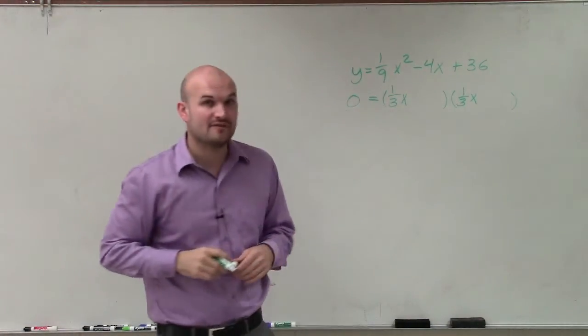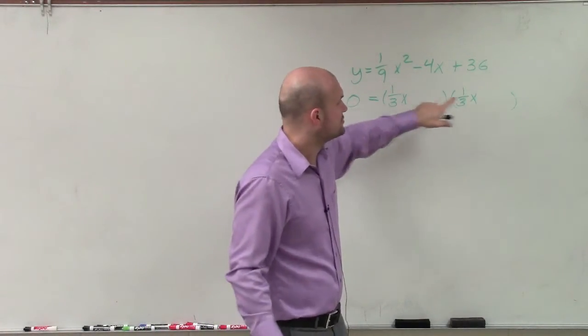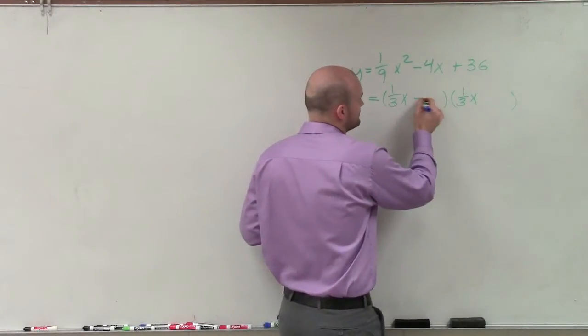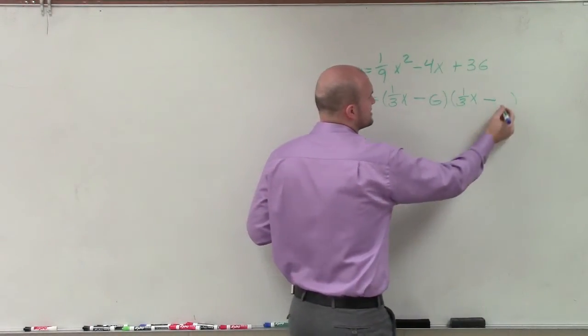Now, since this is a negative as my middle term, I know that my two factors have to be subtraction. And the square root of 36 is going to be 6.